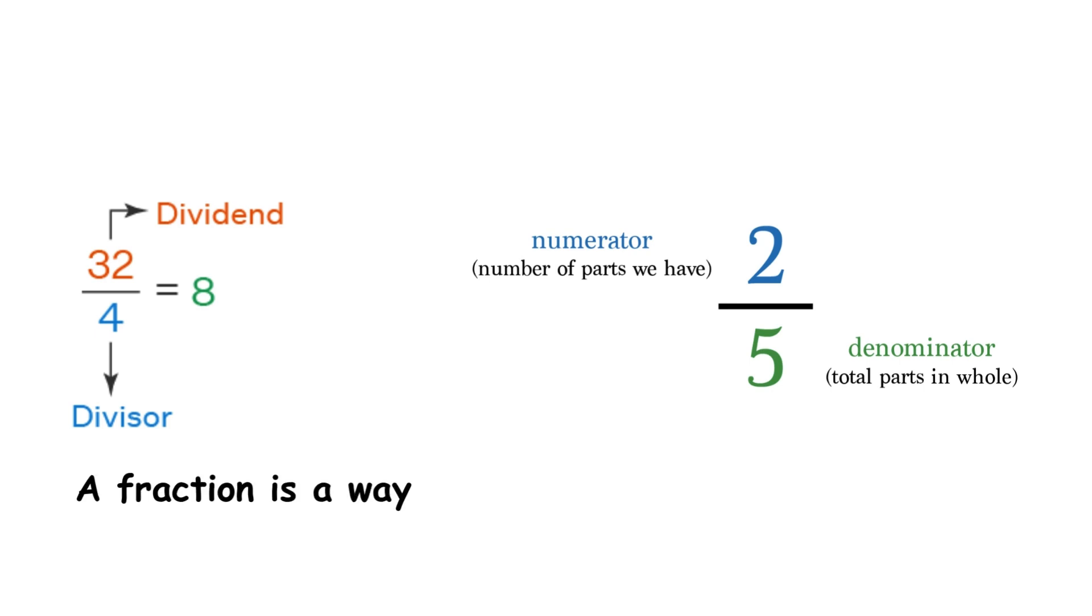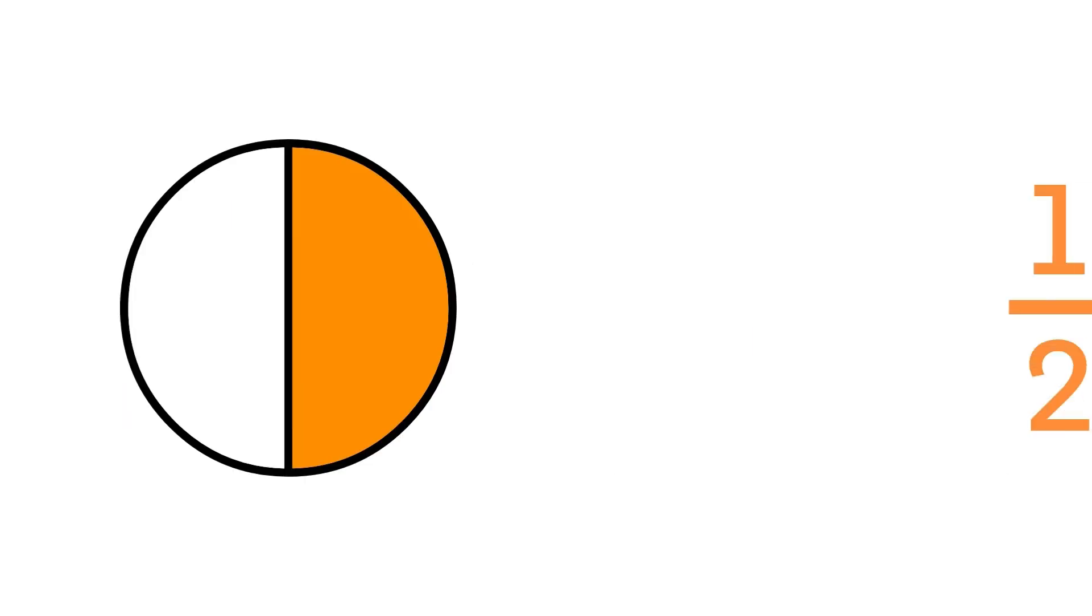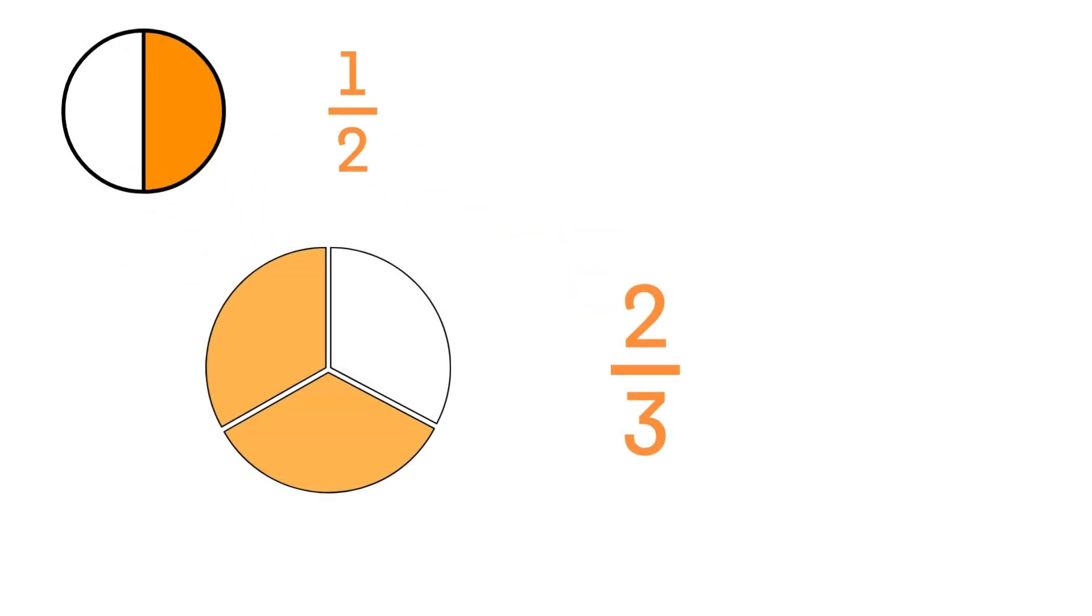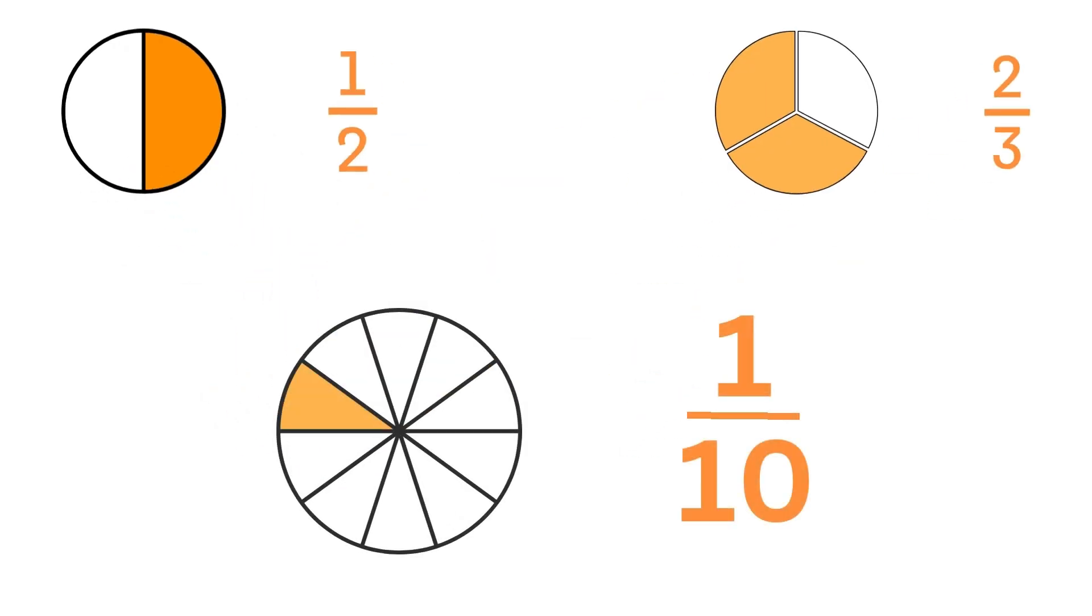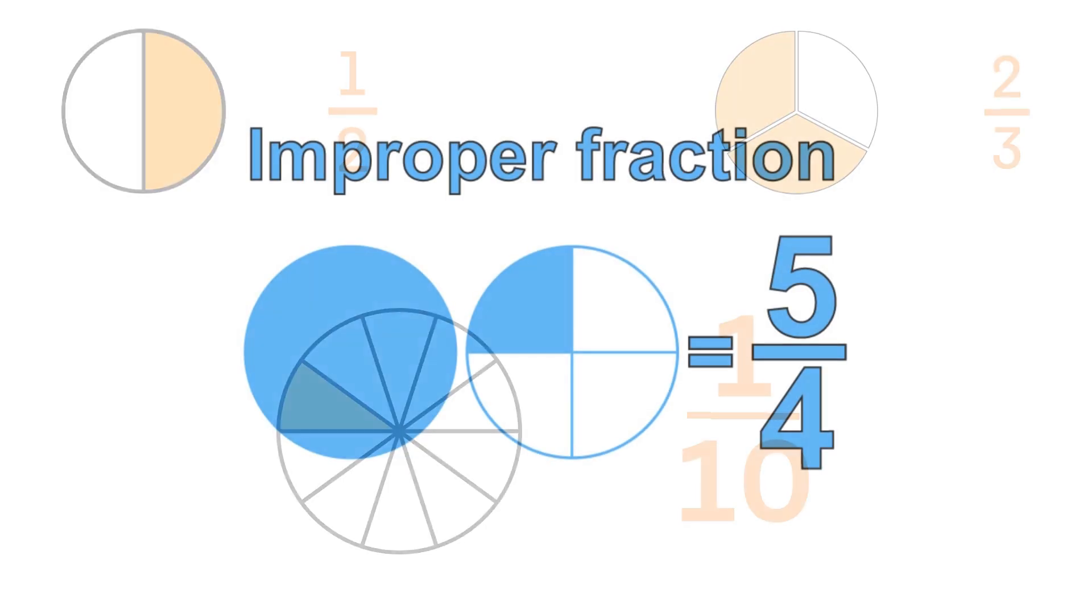A fraction is a way of expressing a non-whole amount. For example, a half is 1 over 2, 2 thirds is 2 over 3, and a tenth is 1 over 10. If a fraction's numerator is greater than or equal to its denominator, it is called an improper fraction.